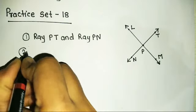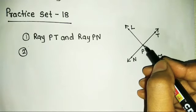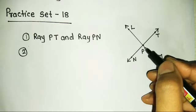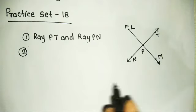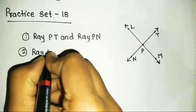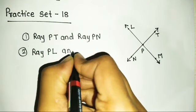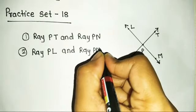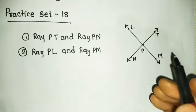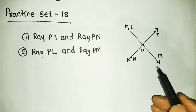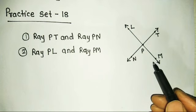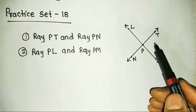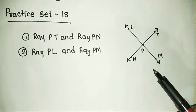The second pair: again P is the origin which is common to two rays. Which are those two rays? Ray PL and ray PM. So ray PL and ray PM form a straight line. We found two pairs which are opposite rays.